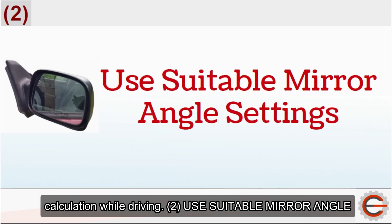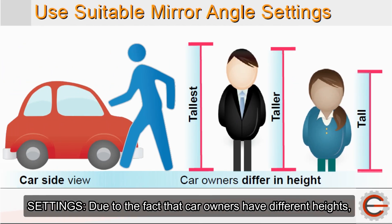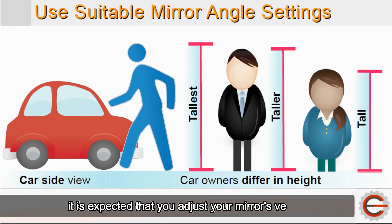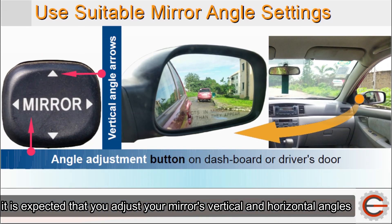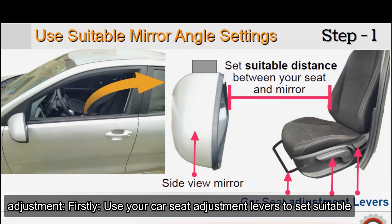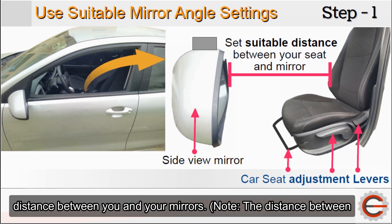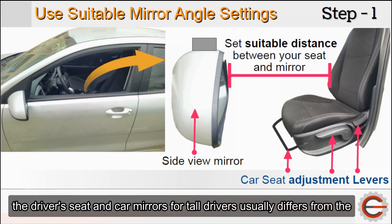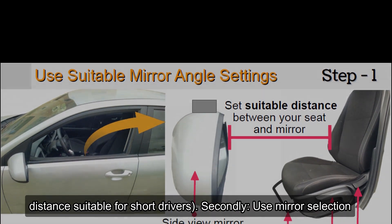Tip 2: Use suitable mirror angle settings. Due to the fact that car owners have different heights, it is expected that you adjust your mirror's vertical and horizontal angles to suit your height. Take the following three steps for mirror adjustment. Firstly, use your car seat adjustment levers to set a suitable distance between you and your mirrors. Note: the distance between the driver's seat and car mirrors for tall drivers usually differs from the distance suitable for short drivers.